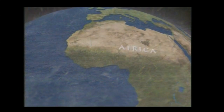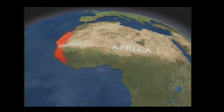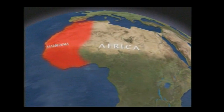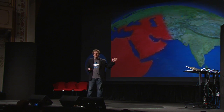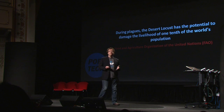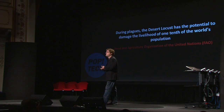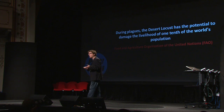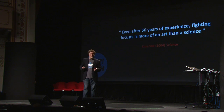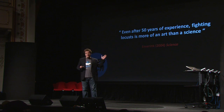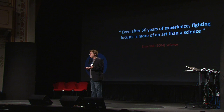Why is this an important problem? I do my field research in Mauritania. This one species of locust can invade up to one-fifth of the Earth's land surface during plague years, but these are poor countries who cannot afford to buy chemicals, so there's virtually no money and no research going into this. The FAO estimates they impact the livelihood of one in ten people on the planet. In the journal Science, it was written that even after 50 years of experience, fighting locusts is more of an art than a science.